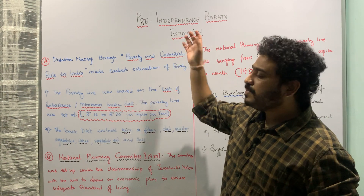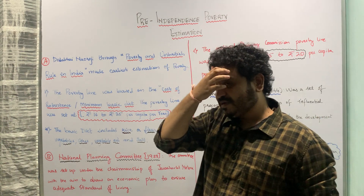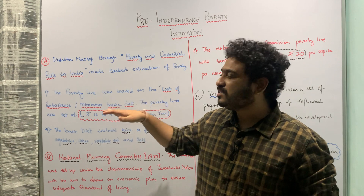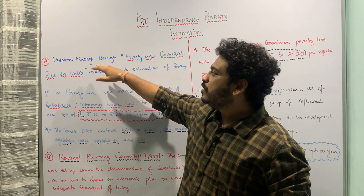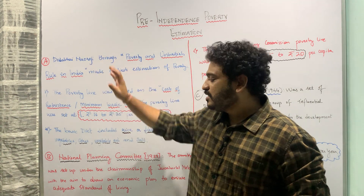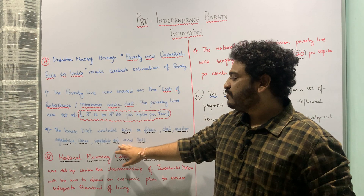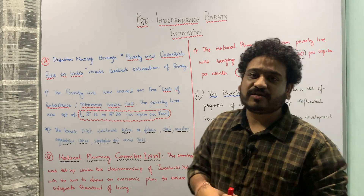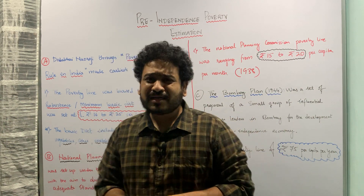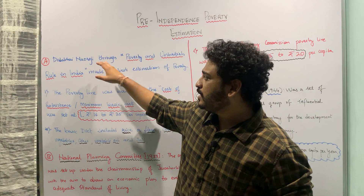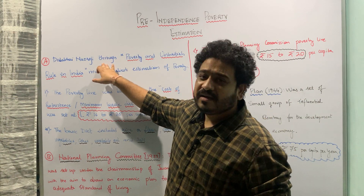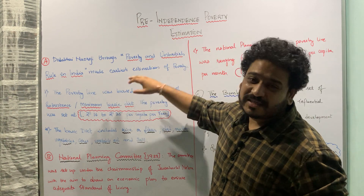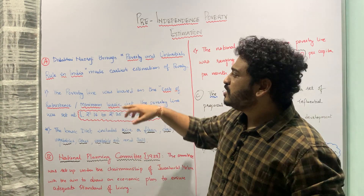We can look at the pre-independence poverty estimation in the Indian context from three different angles. The first one was through Dadabhai Naoroji's lens. The second is from the National Planning Committee's lens, and the third is the Bombay Plan lens. So let us look at what Dadabhai Naoroji had in store for us as far as poverty estimation is concerned in the Indian context.